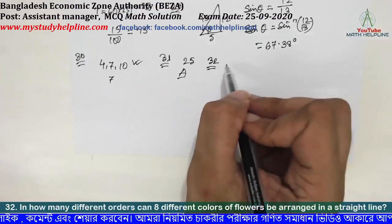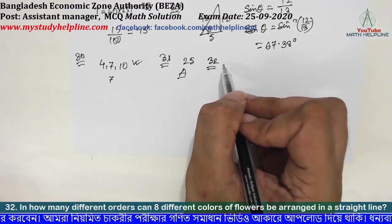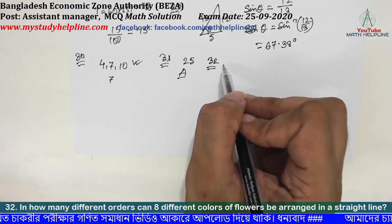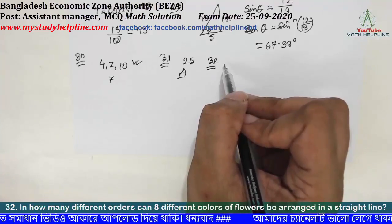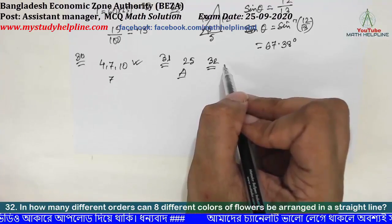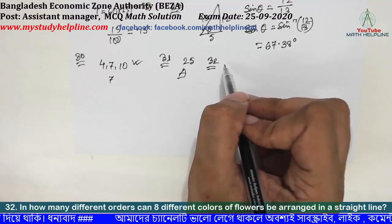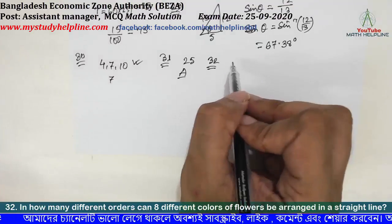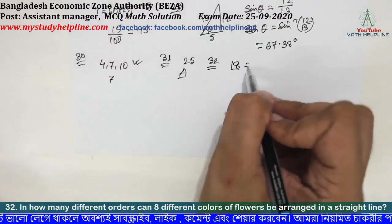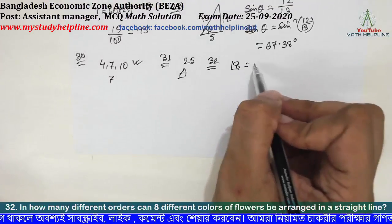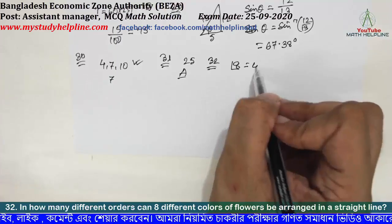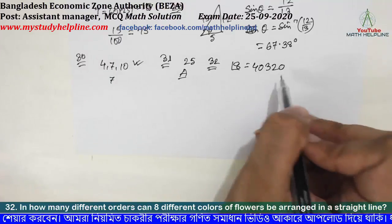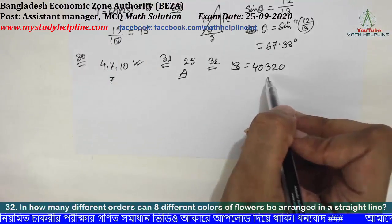Number 32: how many different orders can 8 different colors of flowers be arranged in a straight line? For 8 different colors in a straight line, the answer is 8 factorial = 8! = 40320.